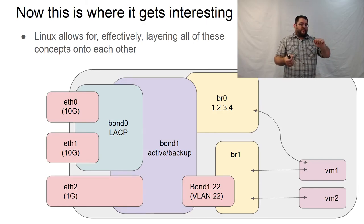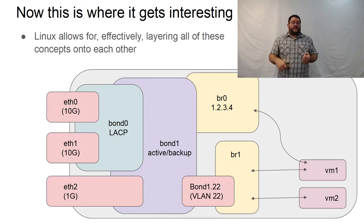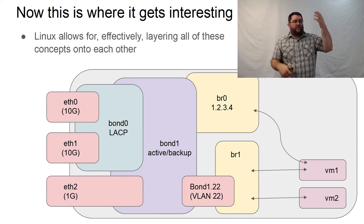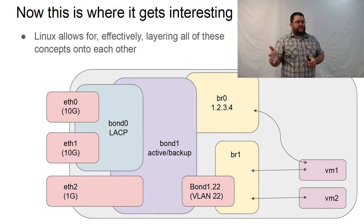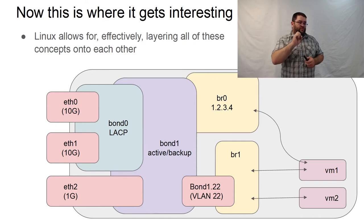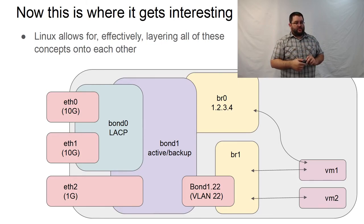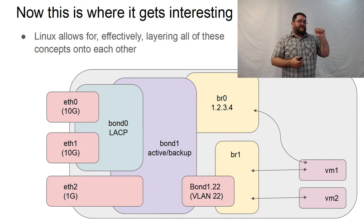VM one can also talk to bridge one. Bridge one does not have an IP address assigned to it — from the host's perspective it's just a bridge; the host can't talk on that segment. Bridge one is attached to VM one, VM two, and bond one dot 22 — a VLAN 22 interface created on top of bond one. This means all traffic coming out of bridge one will be tagged as VLAN 22. So when it exits on ETH0, ETH1, or ETH2, it retains its VLAN tag of 22 and sits on whatever network segment corresponds to VLAN 22.